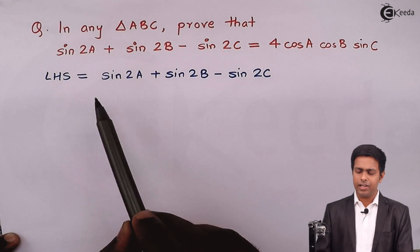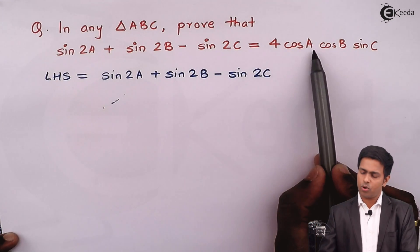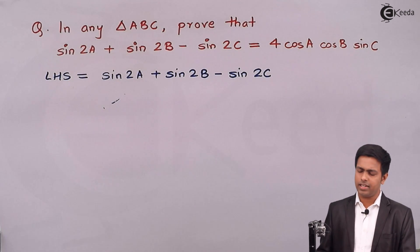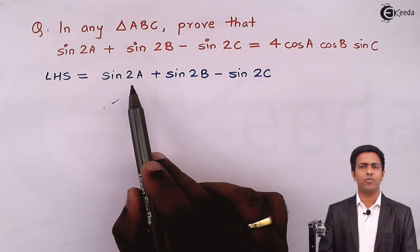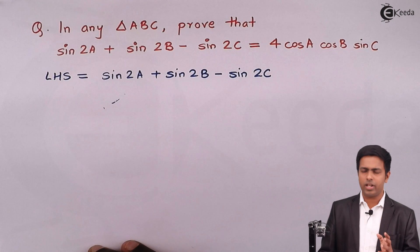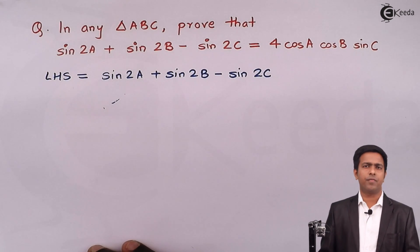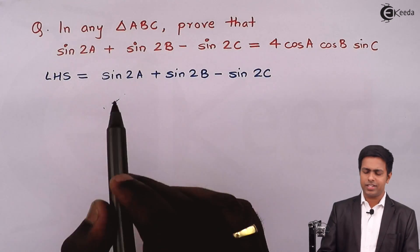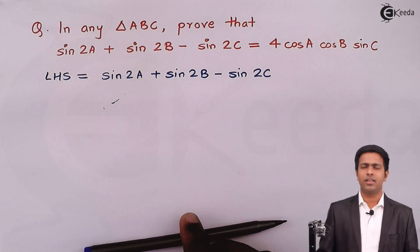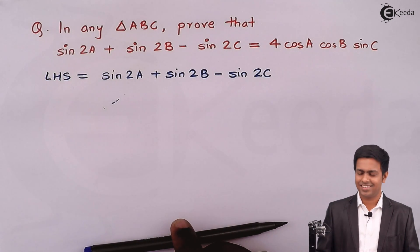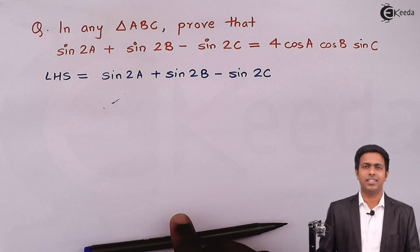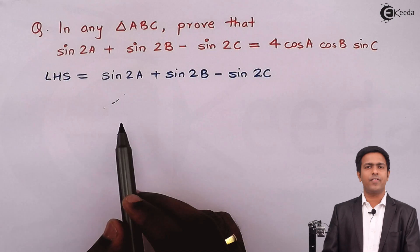To prove that sin2A plus sin2B minus sin2C equals 4cosA cosB sinC, we first observe the right hand side. On the right hand side the angles are A, B, C, whereas on the left hand side we have 2A, 2B, and 2C. So we need to make our angles on the left hand side half. Looking at the first two terms, sin2A plus sin2B, this reminds us of the factorization formula in trigonometry.